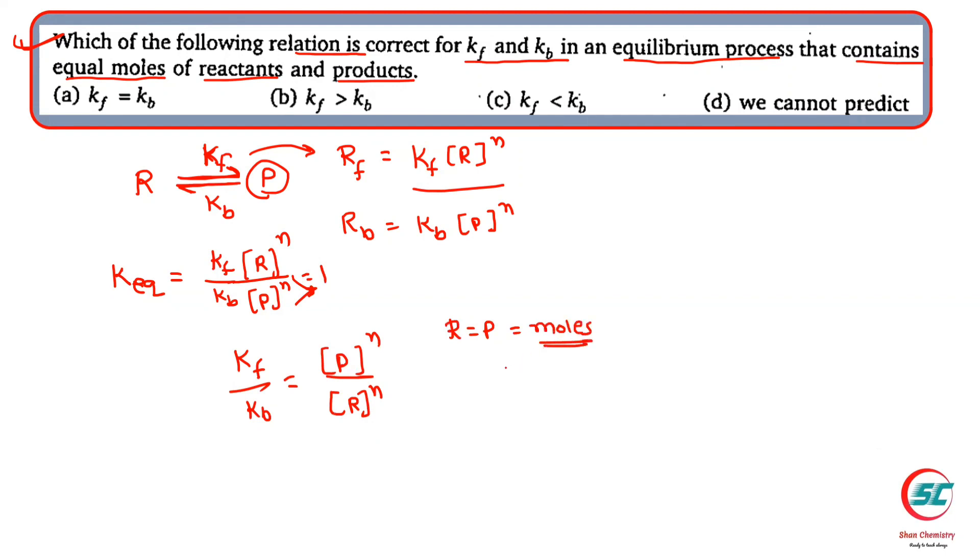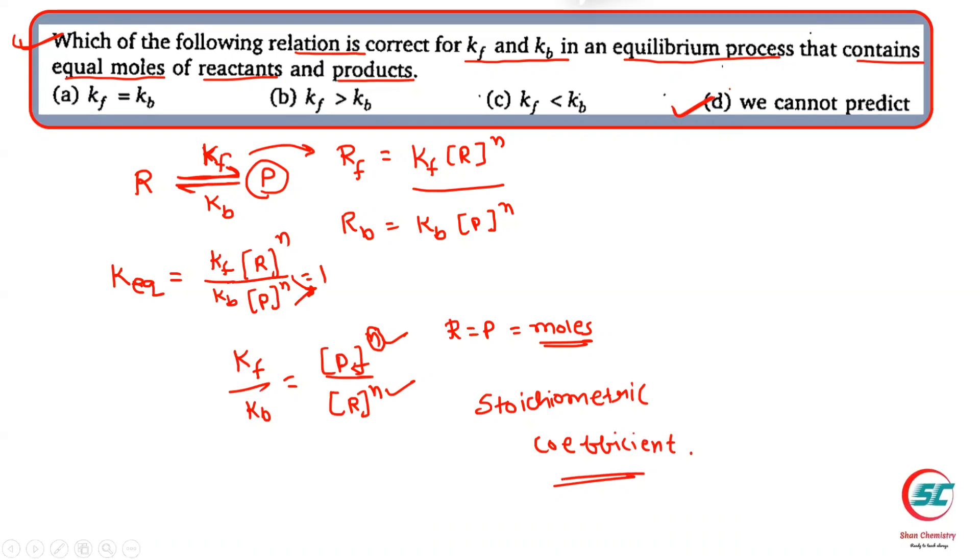What you need is the stoichiometric coefficient, which is not given in the question. It means your answer will be option number D: we cannot predict anything. Okay sir, thank you sir, have a nice day.